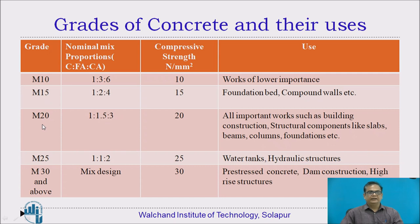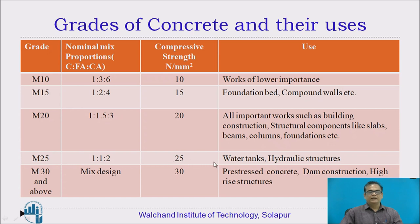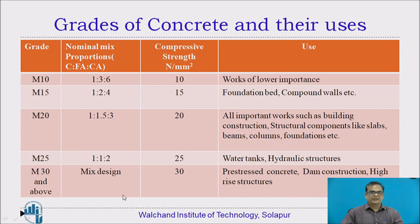M20 is an important grade of concrete used everywhere for all building constructions — structural components like slabs, beams, columns, and foundations. Nominal mix proportions are 1:1.5:3 and compressive strength is 20 N per mm². This concrete is also used for water tanks and hydraulic structures where high precision is required. M30 and above are designed mixes, with compressive strength of 30 N per mm², used for prestressed concrete, dam constructions, and high-rise structures. Concrete up to grade M60 or nowadays even M100 can be achieved.